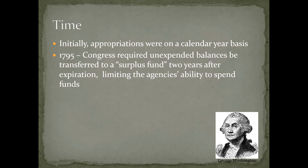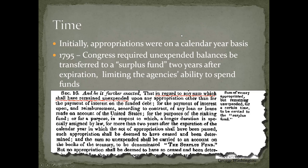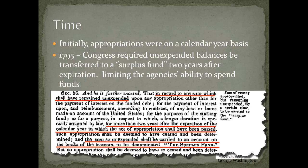The 1795 act limited the agency's ability to spend funds. The language stated that any sum which shall have remained unexpended for more than two years after the expiration of the calendar year in which the appropriation was passed shall be carried to an account to be denominated the surplus fund. The surplus fund wasn't a specific pot of money — it was Congress's way of expressing that the funds were no longer available to the executive branch to be spent.